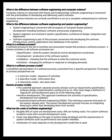Computer science theories are currently insufficient to act as a complete underpinning for software engineering. The difference between software engineering and system engineering: system engineering is concerned with all aspects of computer-based systems development including hardware, software, and process engineering. System engineers are involved in system specification, architectural design, integration, and deployment. Software engineering is a part of this process, concerned with developing the software infrastructure, control, applications, and database in the system.